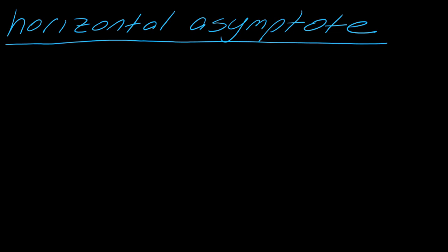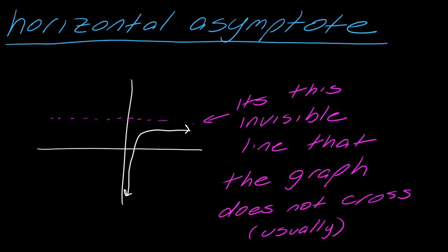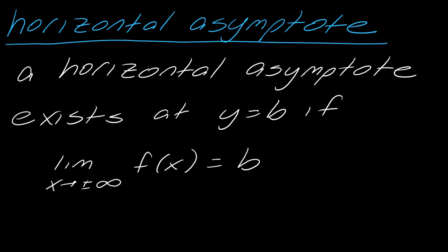So first of all, what is a horizontal asymptote? If I give you a graph, a lot of times people already know that it's like this invisible line — a dotted line that the graph won't cross but will get really close to. Now from a calculus viewpoint, a horizontal asymptote exists at y equals b if the limit as x approaches positive or negative infinity approaches a number. That number is the horizontal asymptote.